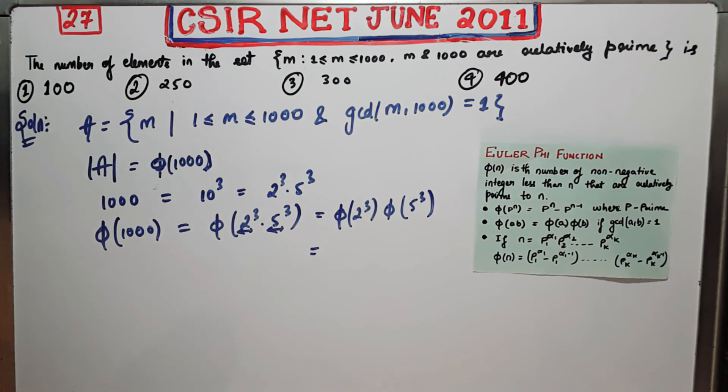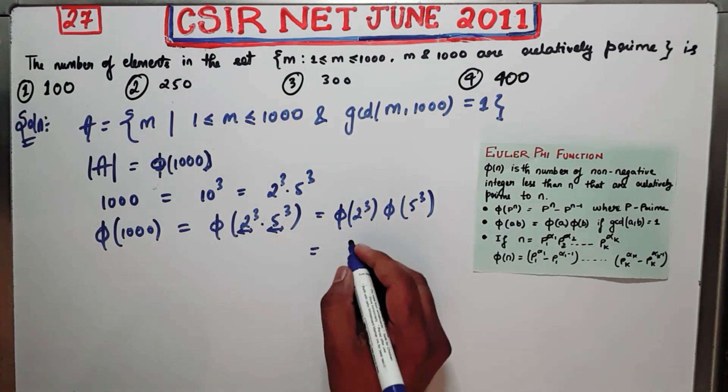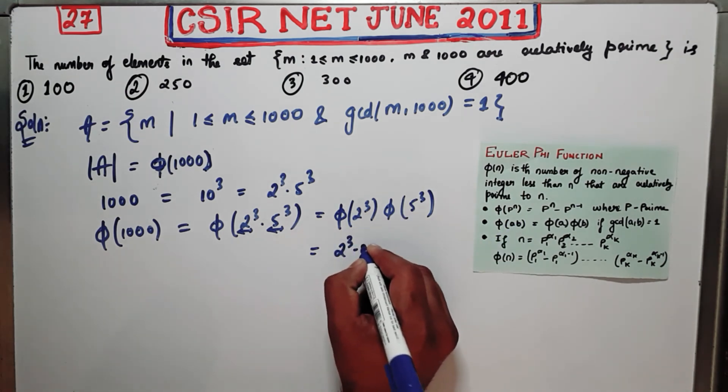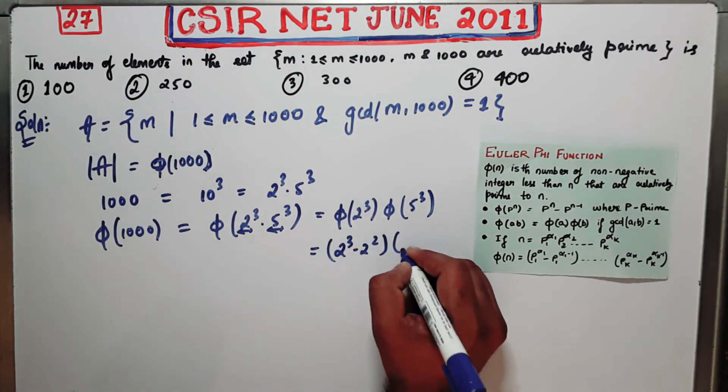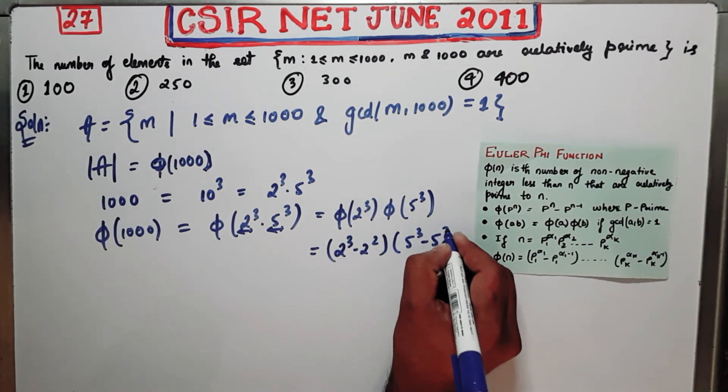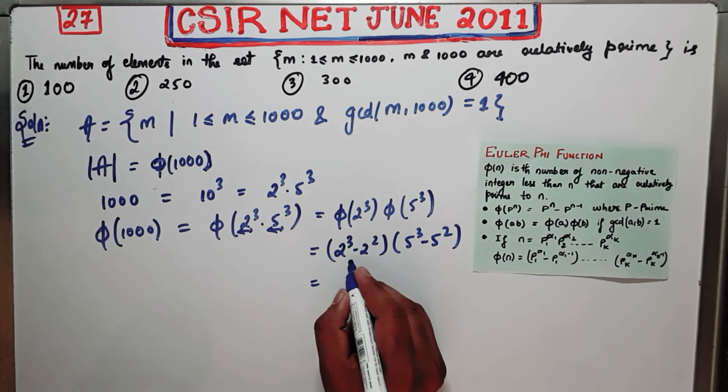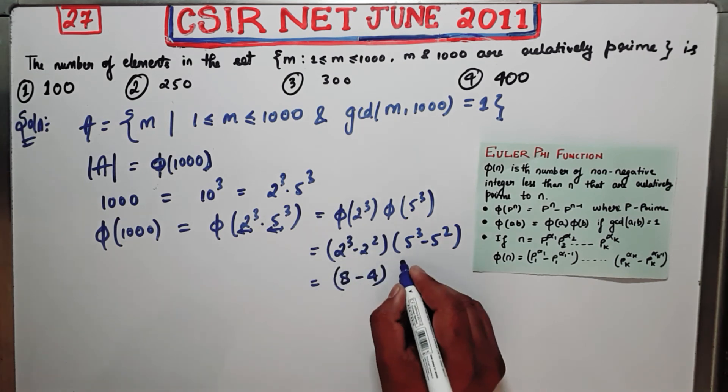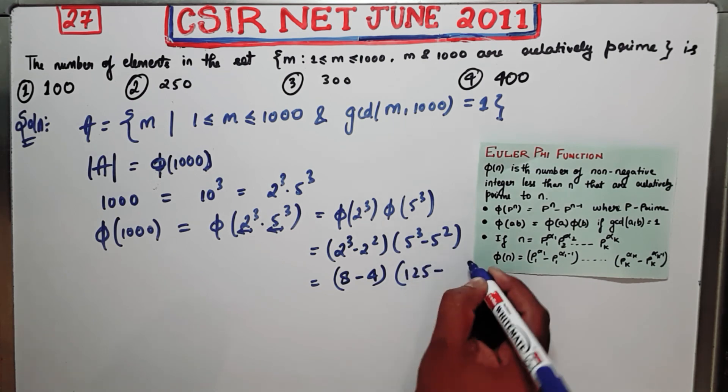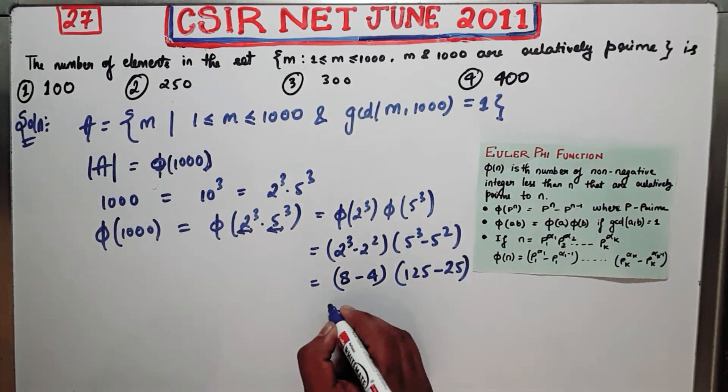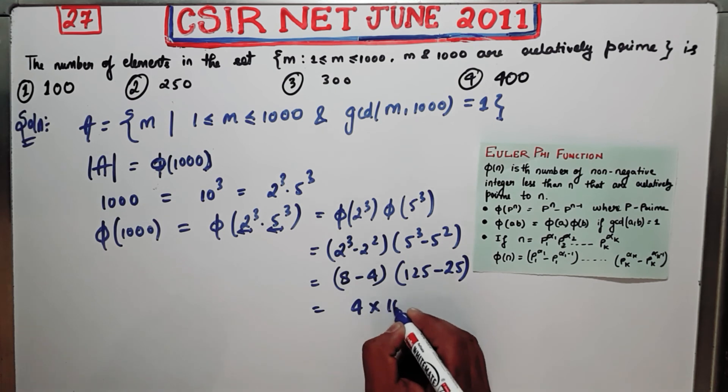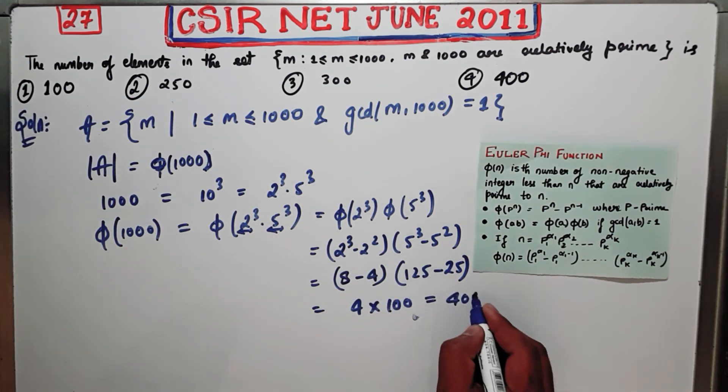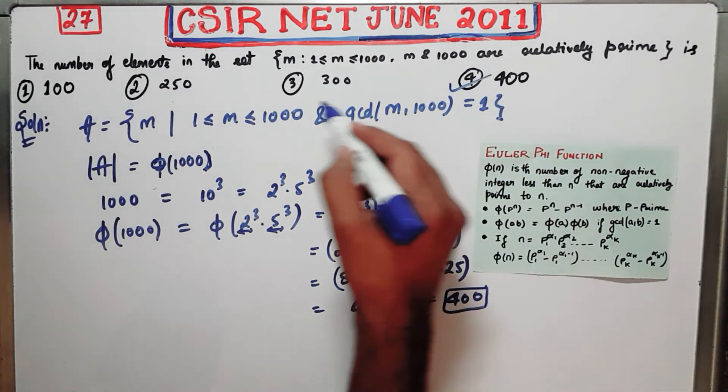Now use the first property. It says if p is a prime number then you can do like this: 2 cube minus 2 square times 5 cube minus 5 square. So this thing will be 8 minus 4 times 125 minus 25. So you will get 4 into 100, that means 400. So 400 is your correct answer.